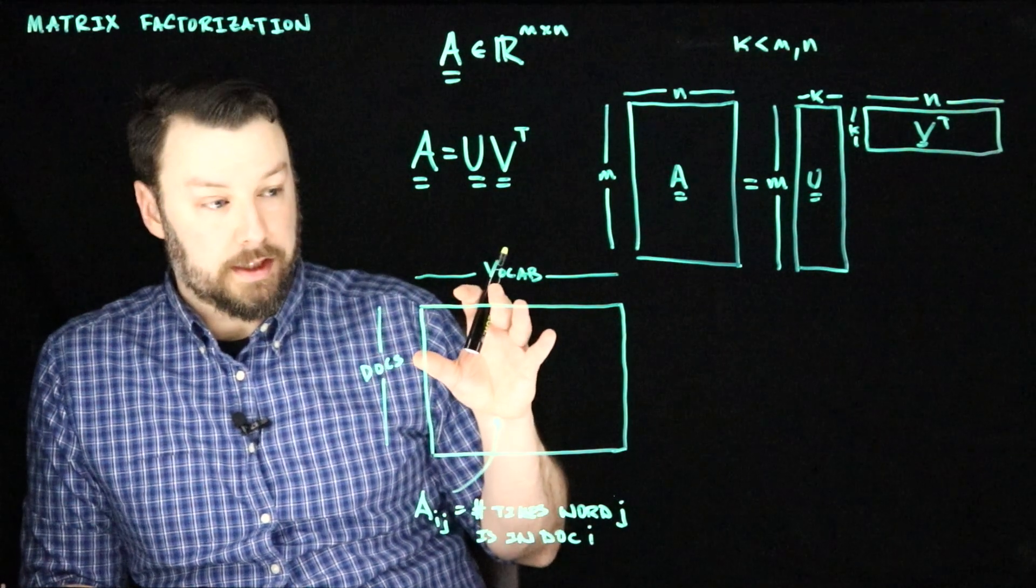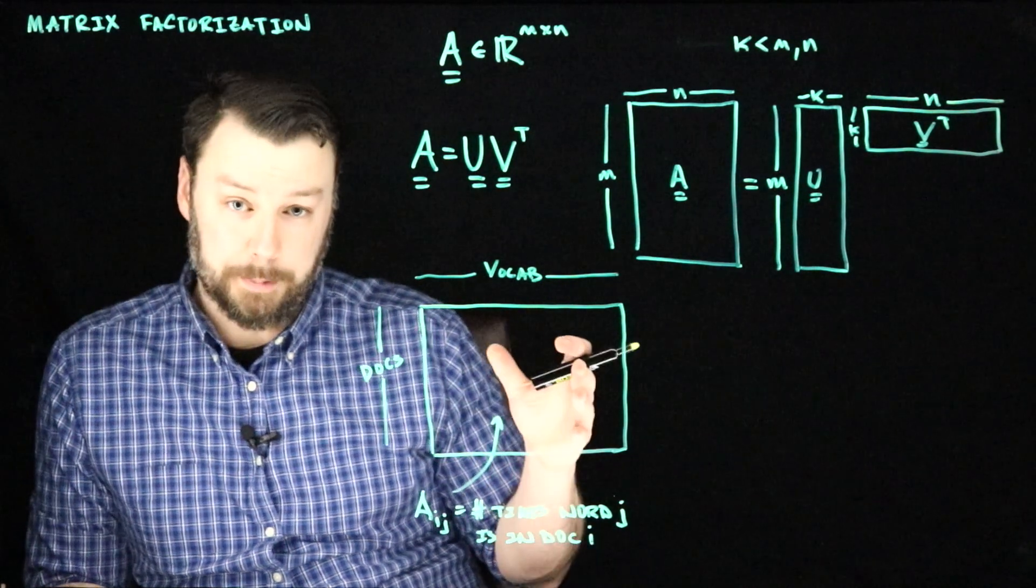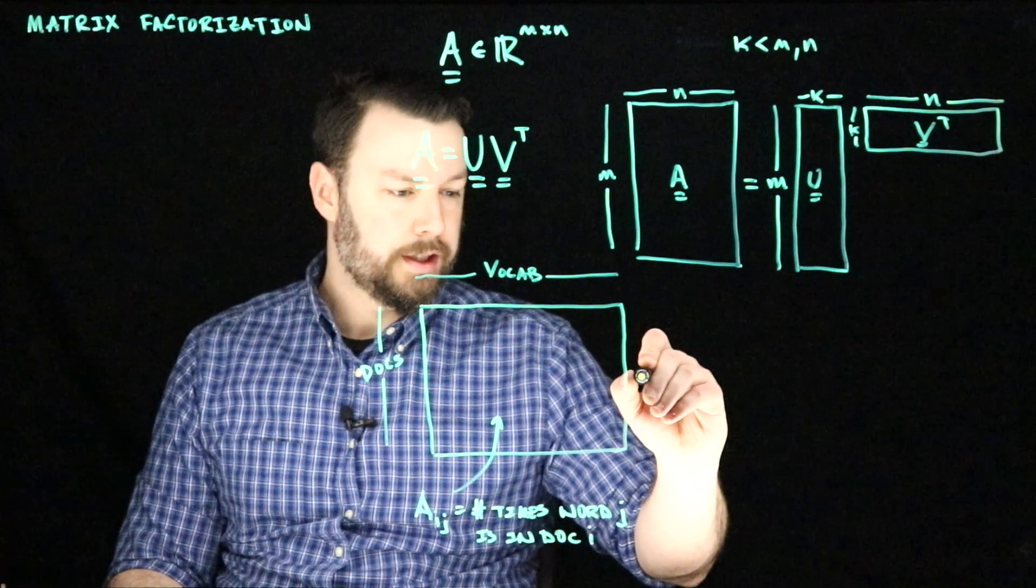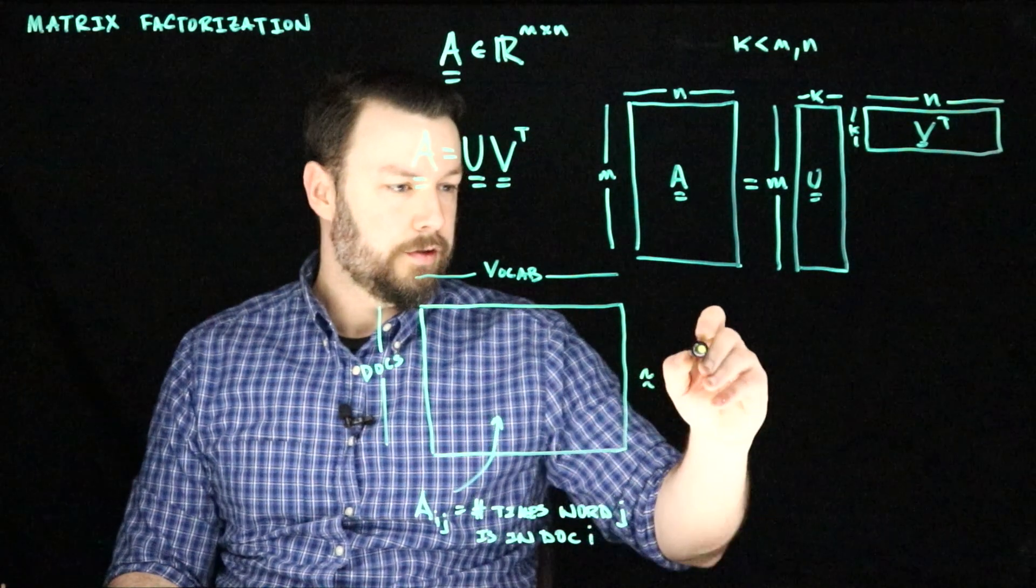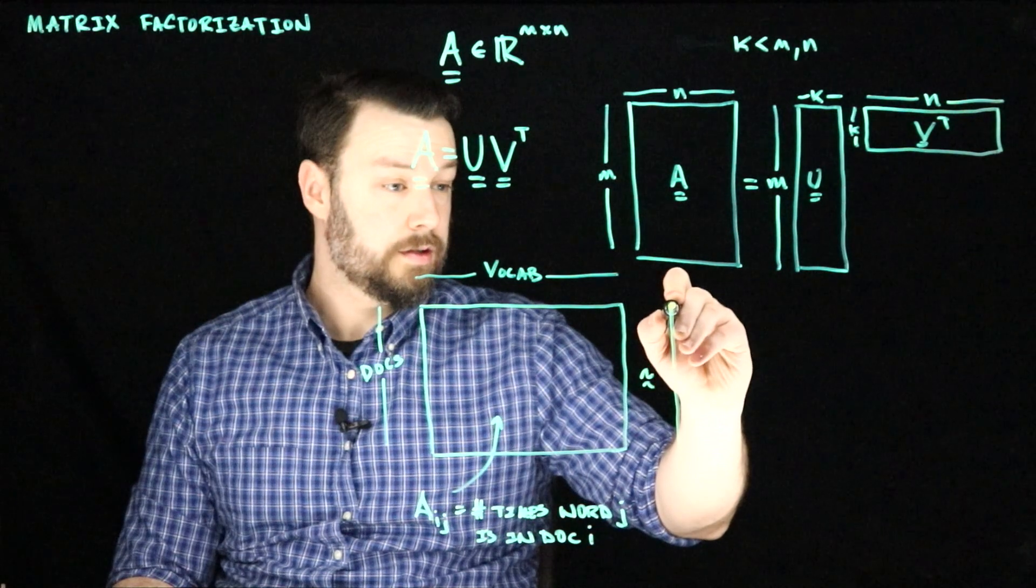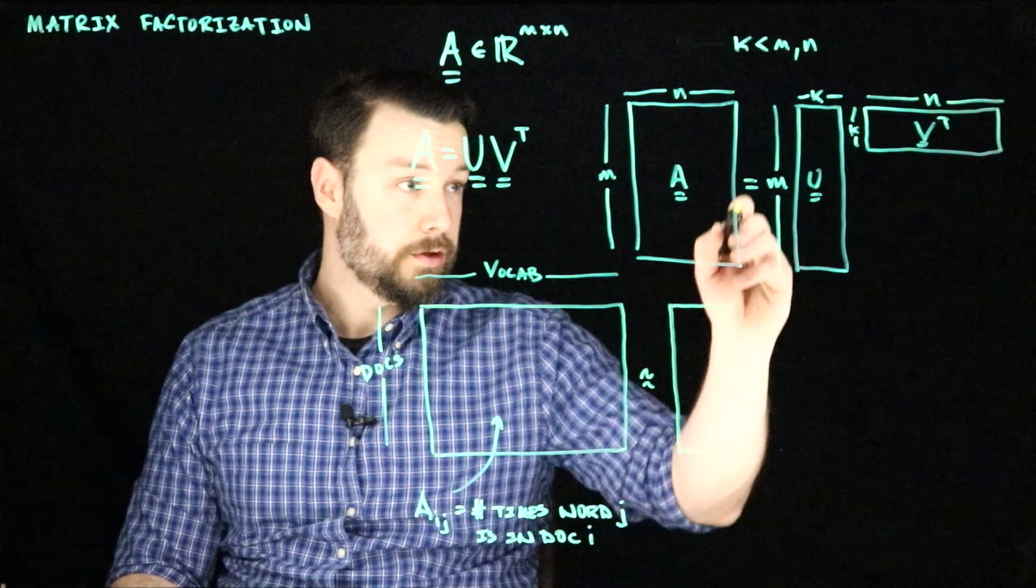And so one of the really interesting things we can do is try to discover what we would call the topics associated with these counts. So what we could do is imagine that this matrix of counts from some corpus is approximately low rank, just like we drew up here.